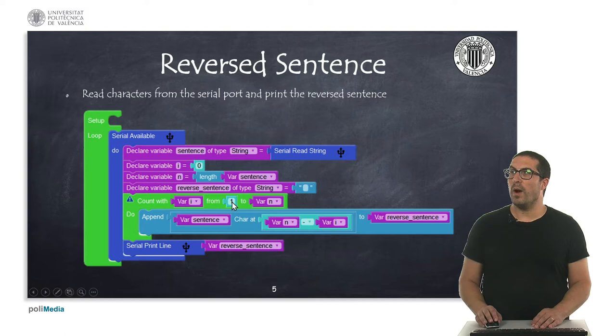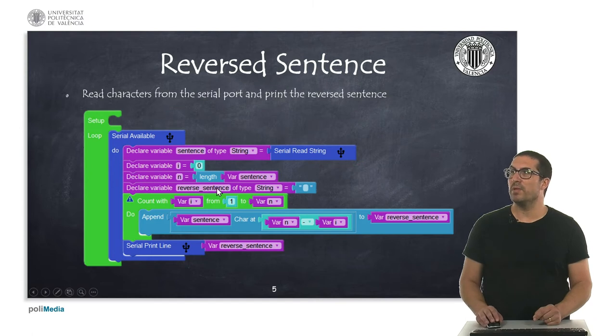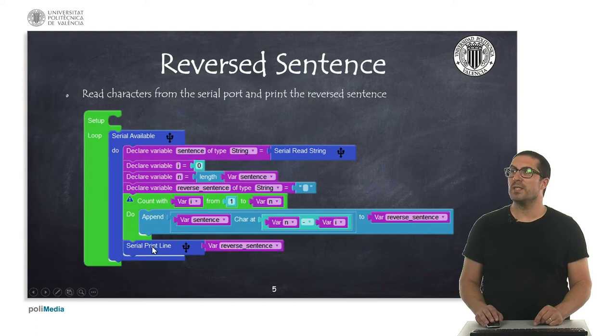What we do is we get the character in reverse order. We get the character starting from the last character and we append that into a new string variable which is this one which has been initialized empty. Every character we are appending that to the end of this string and once it's done, we print the result.